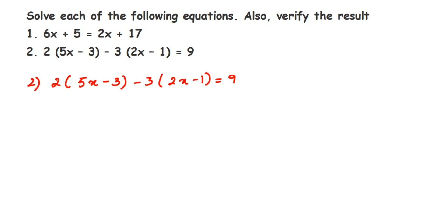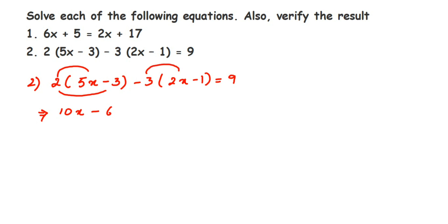We have 2 outside the first bracket, so multiply 2 with 5x to get 10x, and 2 with minus 3 to get minus 6. Next, for minus 3 outside the second bracket: minus 3 times 2x gives minus 6x, and minus 3 times minus 1 gives plus 3 — because a negative times a negative, or an even number of negatives, gives a positive. This equals 9.